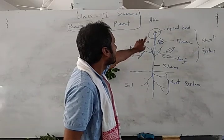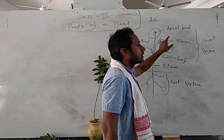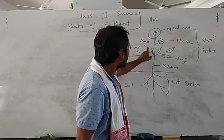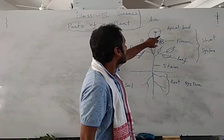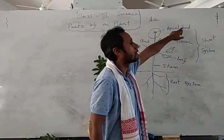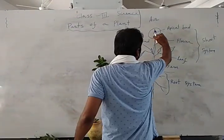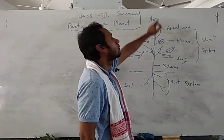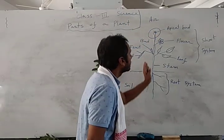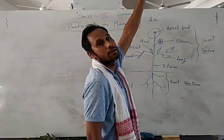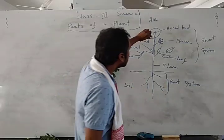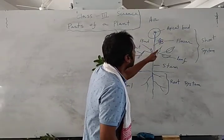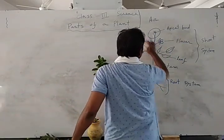The topmost portion is called the apical bud. If the topmost portion of the plant grows upward, it will increase the height of the plant. But if we pinch this portion, the plant stops growing from there and new branches come out instead.